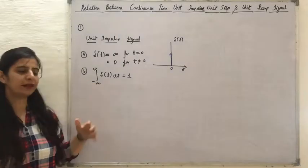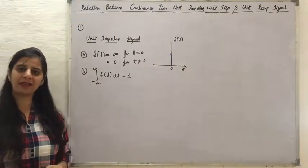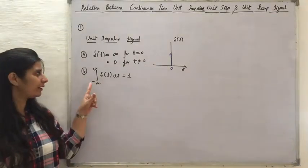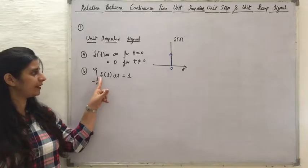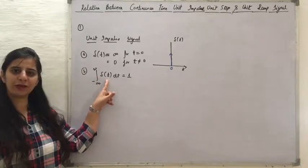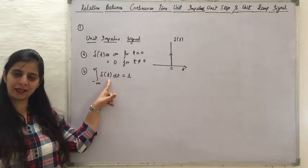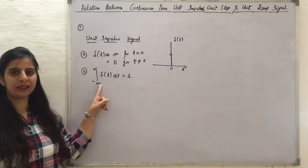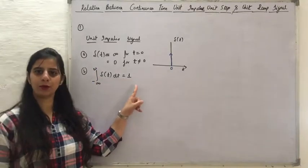The important property related to a unit impulse signal is that when we take the integration of the unit impulse signal throughout the entire time duration, it is equal to 1.